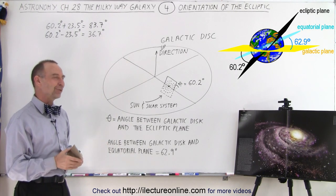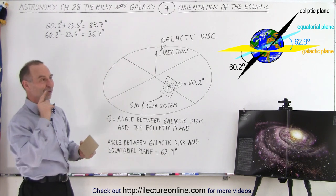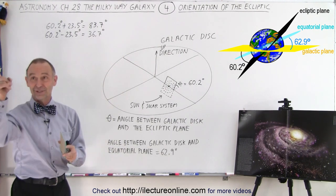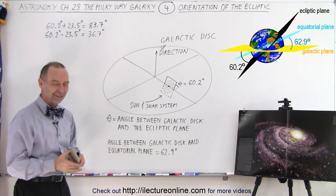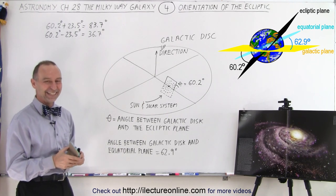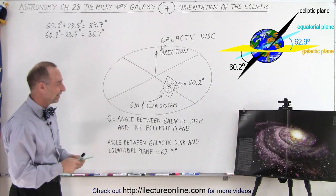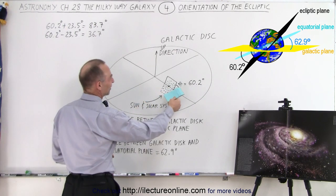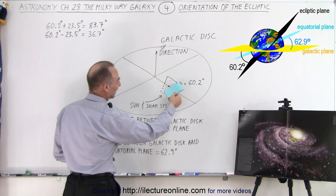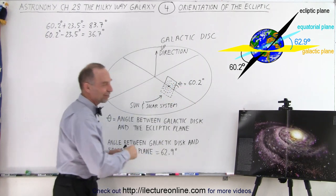You could probably ignore all that and just say, hey, I'm going to look in the direction of Orion or Sagittarius and not really care what the relative orientation is. It's just good to know. I think it's interesting to know that our ecliptic plane is not in the plane of the galactic disk. It's at an angle of 60.2 degrees.